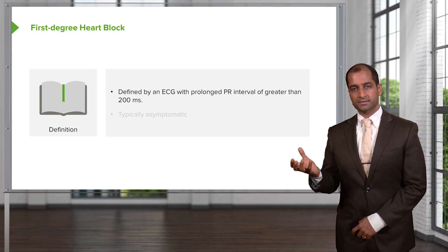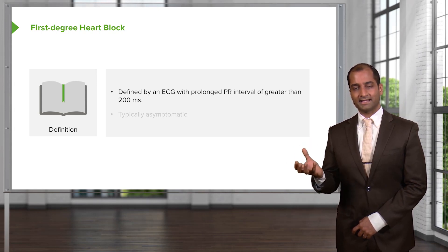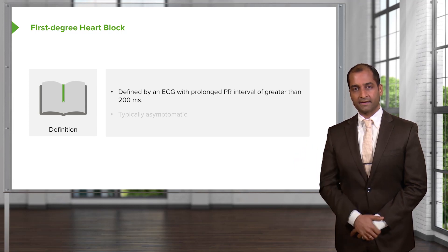So, 200 milliseconds is equivalent to 0.2 seconds. If it's greater than that, the PR interval, we have first-degree AV block or first-degree heart block.